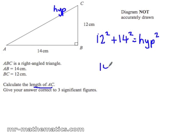So 12 squared is 144, plus 196 which is 14 squared, equals the hypotenuse squared.